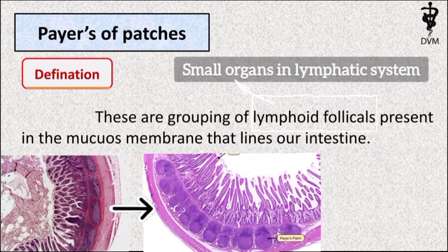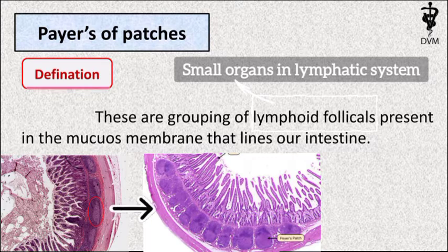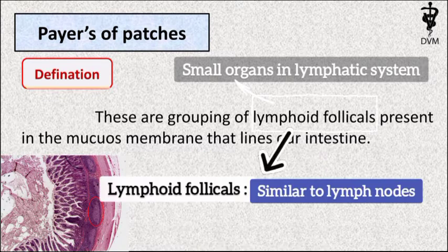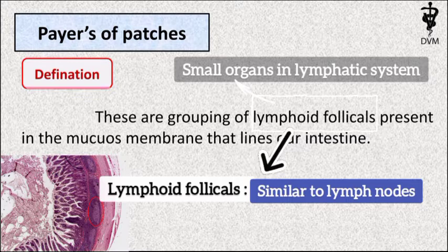Lymphoid follicles are small organs in the lymphatic system. These lymphoid follicles are similar to lymph nodes.